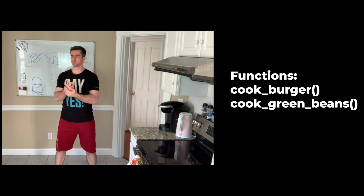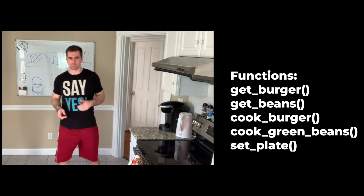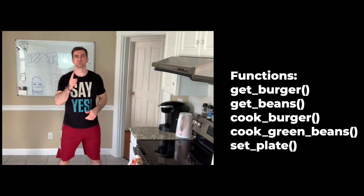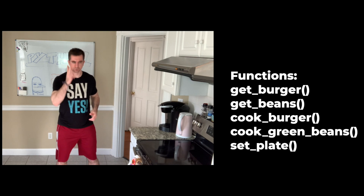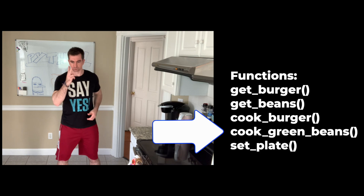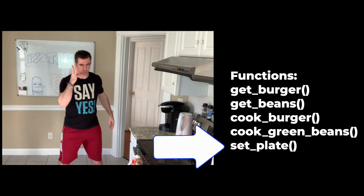Similarly, we need to wait for the burgers and the green beans to cook. He's also going to need a couple other functions including getting the burger out, getting the beans, and setting the plate. This is the entire set of functions he needs to cook dinner: get burger, get beans, cook burger, cook green beans, and set the plate.